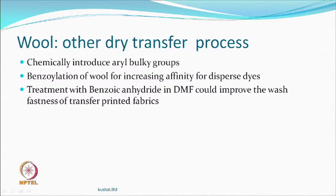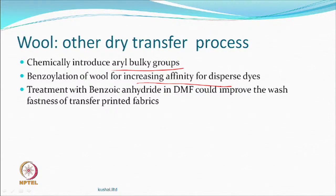For wool they tried benzoylation — one is that you have changed the hydrophilic group to aryl groups, so making it more hydrophobic, so reception will be more. Benzoylation was one thing to increase the affinity of dispersed dyes. One of the processes used benzoic anhydride instead of benzoyl chloride, and used DMF as a solvent, which they found giving better results. But the issue is using a solvent which is not a regular solvent in the printing industry will always be a challenge.